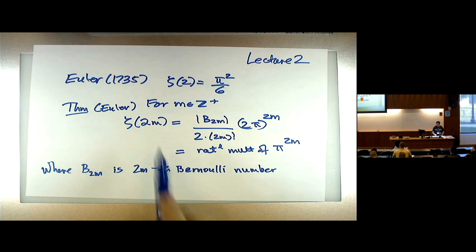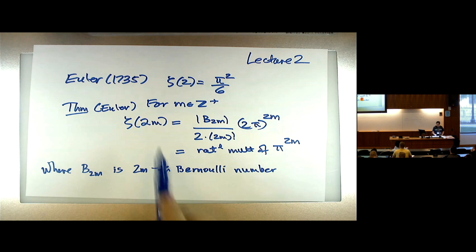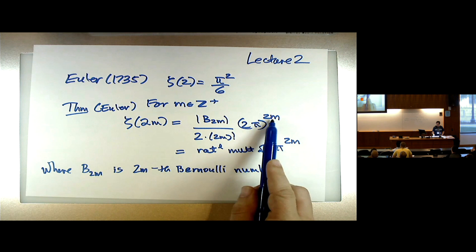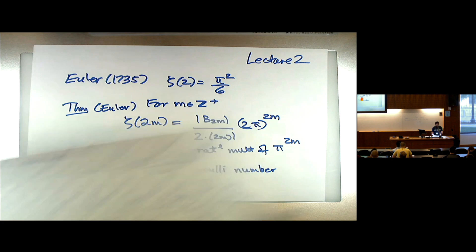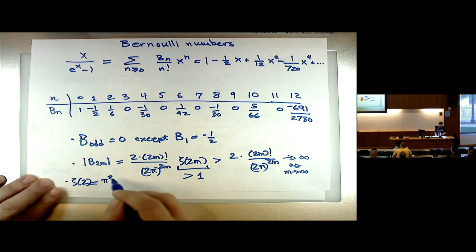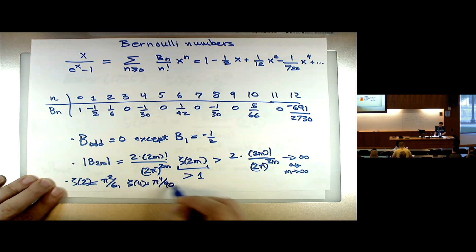As an example of Euler's formula, if I set m to be 1, zeta(2) = B_2 / (2 · 2! · (2π)^2). B_2 is 1/6, 2·(2!) is 4, (2π)^2 gives another 4, the 4s cancel, and I get π²/6. So it really does recover Euler's evaluation. You would find that zeta(2) = π²/6, zeta(4) = π⁴/90, and so on.